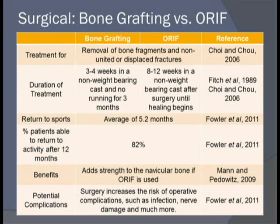Surgical treatment is used for removal of bone fragments and non-united or displaced fractures. The two types are bone grafting and ORIF. Bone grafting has a significantly shorter treatment time, while ORIF has the key advantage of adding strength to the navicular bone. Both treatments show an average return to sports time of 5.2 months, and both have an 82% rate of return to activity at 12 months. However, surgery carries the risk of operative complications such as infection, nerve damage, and risks associated with anesthesia.